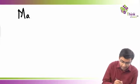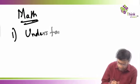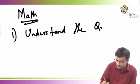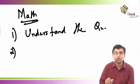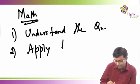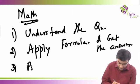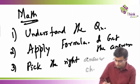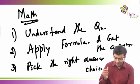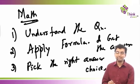Why is this essential? What do we typically do in math questions? The way we solve a math question is: first we understand the question, then we apply a set of formulas, and then we pick the right answer choice. We understand the question, apply the formula, get the answer, and pick the right answer choice. This is the methodology we follow in mathematics.